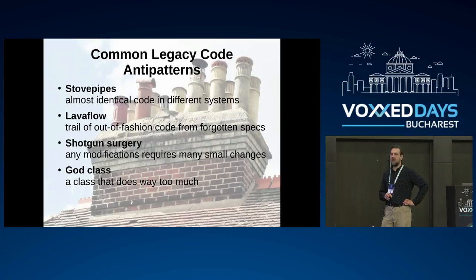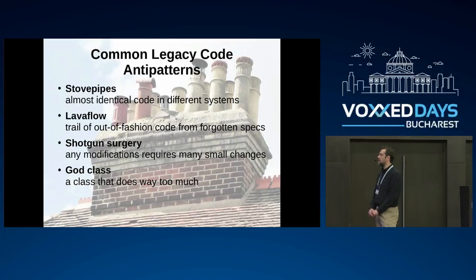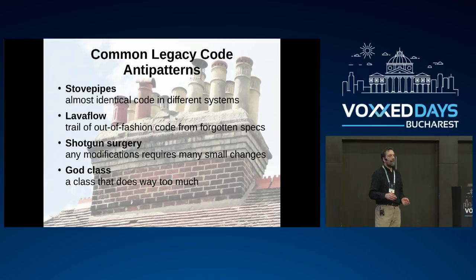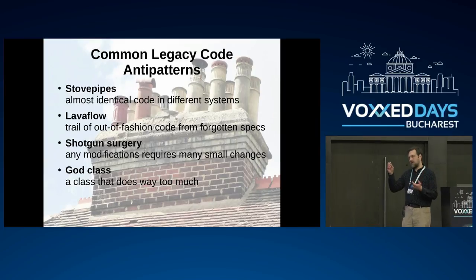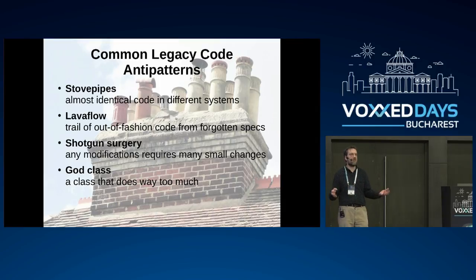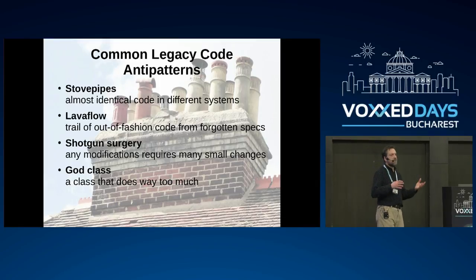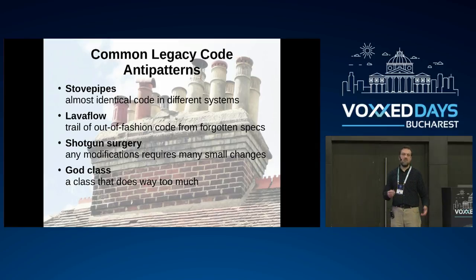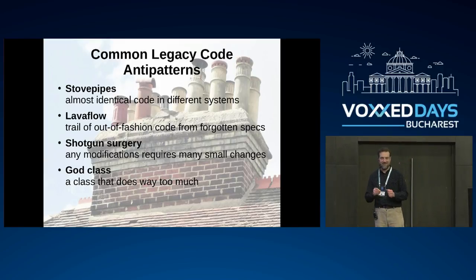Let's go to something technical now — some anti-patterns which are classical for legacy code. Stovepipes is probably the most typical, where in a bigger legacy system you have a lot of copy-paste: stuff that is almost identical apart from a few key things, doing almost the same things over and over. When someone says we also need to work on, for example, swaps — it's more like an option but with this and this difference — you take the option code, copy-paste, rename to swap, and change what needs changing. It happens all the time. This is how legacy code is.